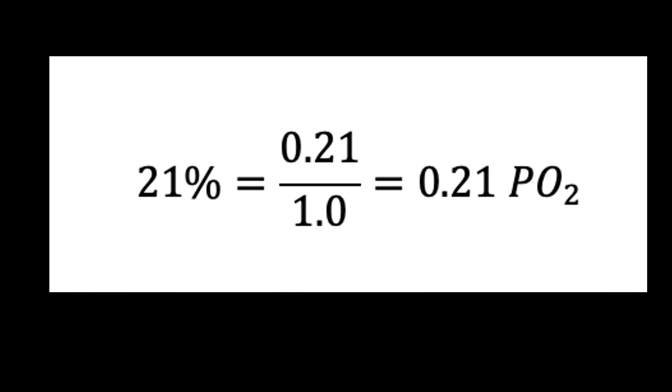Now let's talk about what partial pressure is. At sea level, the atmospheric pressure — the pressure exerted by the atmosphere on your body, your fluids, everything including oxygen and gas — is one atmosphere. If you are breathing regular air at 21% oxygen, the partial pressure of oxygen is 0.21.